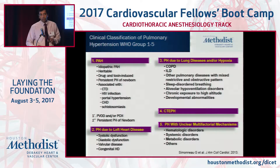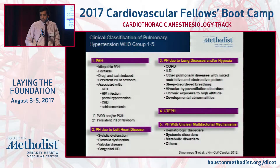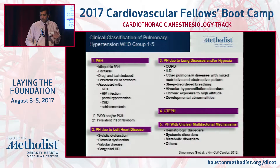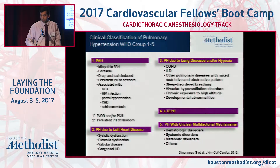PH due to left heart disease is the most common — as cardiologists, this is what we'll end up seeing most. These are patients with systolic and diastolic dysfunction and valvular heart disease. The third group is due to lung disease and/or hypoxia with COPD and interstitial lung disease. The fourth group is chronic thromboembolic PH in patients who've had PEs in the past with pulmonary vascular remodeling leading to PH. Group 1 and Group 4 PH are the ones to really pay attention to, as these two have approved therapies, and Group 4 CTEPH is potentially curable with pulmonary thromboendarterectomy.